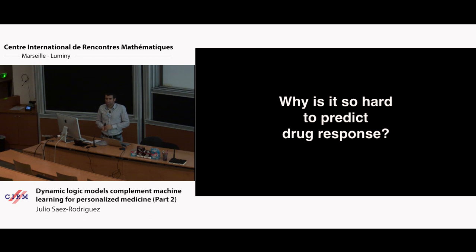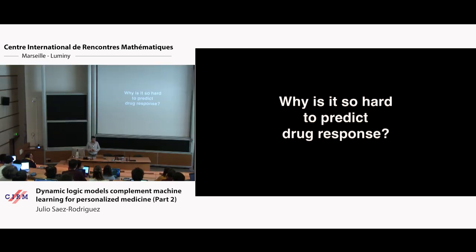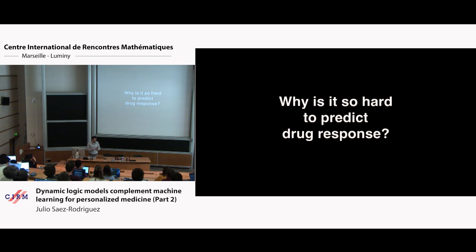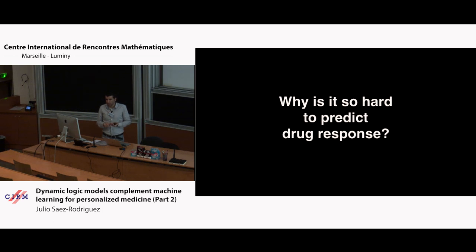So anyone have any idea why it's so hard, what is missing? Biology is chaotic, reproducibility is an issue. There are certainly problems of noise and reproducibility, maybe you need more samples or more omics. But a very important aspect is that in these cases you are trying to predict drug response from basal data — you profile your cell lines at basal status and then try to predict whether a drug works or not. And this is hard, because the effect of the drug is a dynamic process that you're trying to predict from a basal characterization.